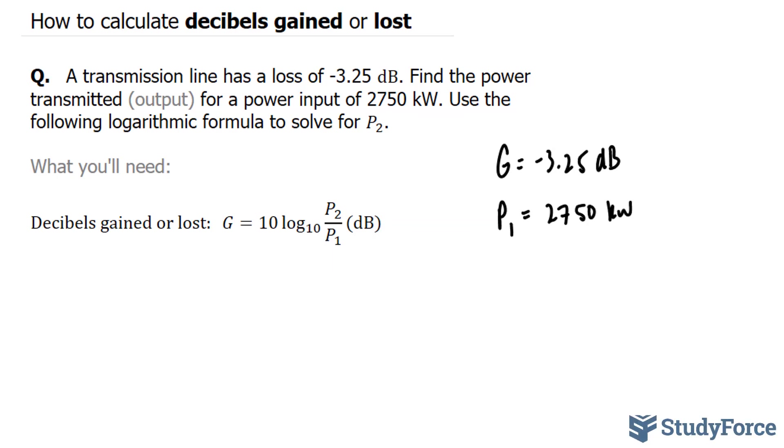Our job is to find P2. I'll substitute these values into the formula, where I get negative 3.25 equals 10 times log of base 10. I won't write base 10 because it's not necessary. P2 is what we're looking for, and P1 is 2750. This dB just represents the units of G.